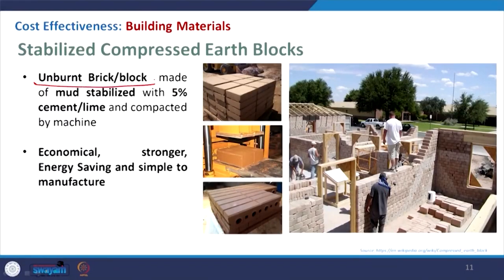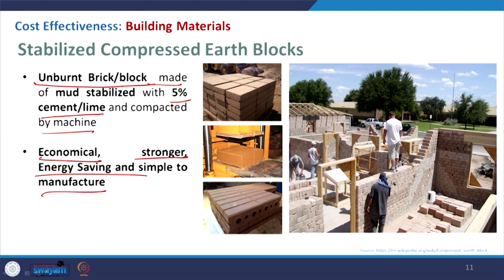Coming to stabilized compressed earth blocks — this is basically unburnt, so no energy is required to burn it. It is a brick where mud is used extensively, with 5 to 10 percent variation of cement or lime as a binder, and it has been compressed with a machine. That gives it enough strength. It is economical, stronger than the conventional one, saves energy since no fuel is needed for burning unlike the traditional process, and has simple manufacturing. The block can be used in construction giving enough strength.